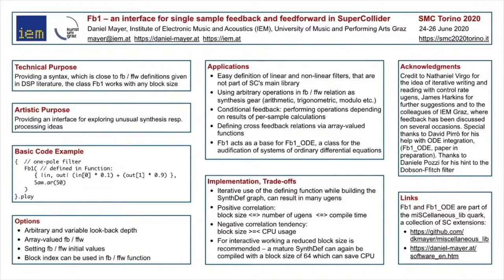The implementation of FB1, following a concept of Nathaniel Virgo, iteratively applies the defining function to control-rate UGens while building a synth-def graph. This can result in a high number of UGens, but not necessarily a high CPU load. It is a good idea to take a lower block size during interactive work in order to reduce compile times. Please see further credits and links to software in the right column. Thanks for your attention.